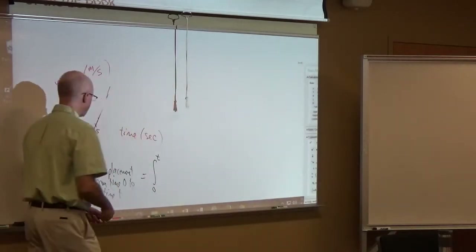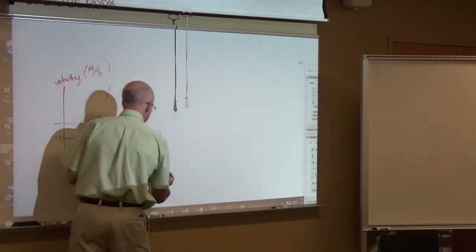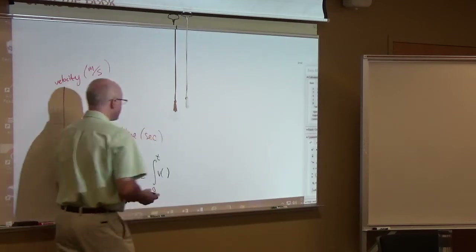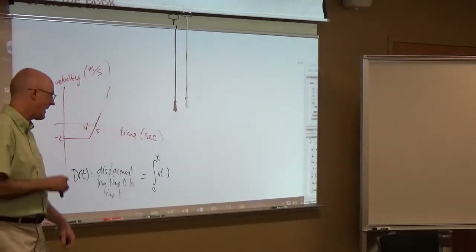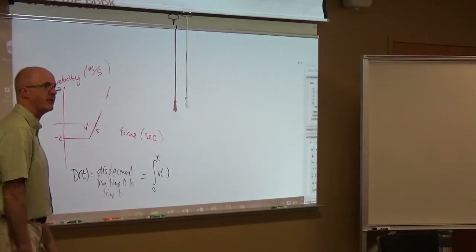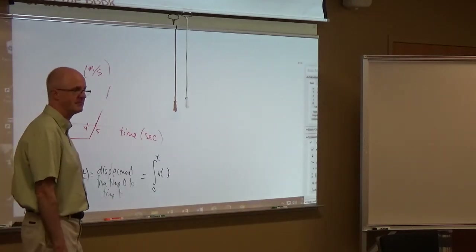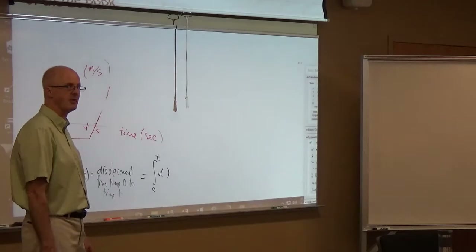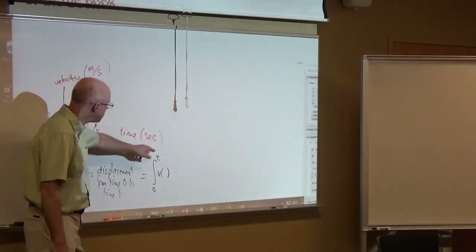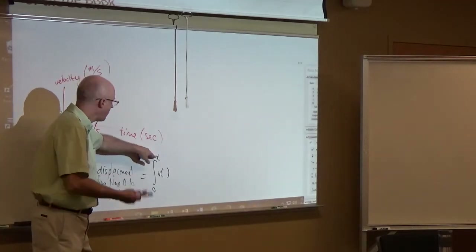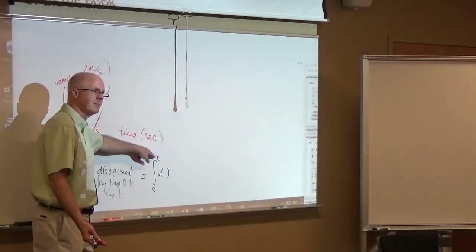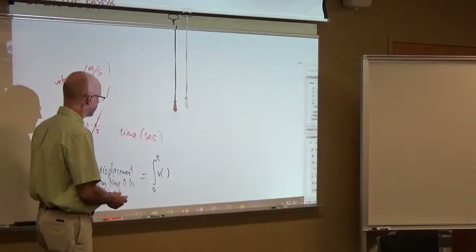By doing that, I'm going to go from 0 to t of the velocity function. I am constructing an anti-derivative of the velocity function — I am creating an anti-derivative of the velocity function. This is going to be a function of t where t is that upper limit. The upper limit is a variable. It's kind of strange, but it's an important perspective to be able to deal with.